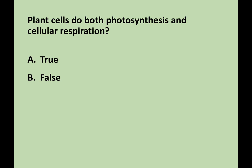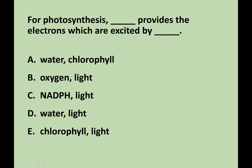Which of the following is a correct distinction between autotrophs and heterotrophs? The answer is C: autotrophs, but not heterotrophs, can nourish themselves beginning with CO2 and other inorganic nutrients. They both require oxygen; they both have mitochondria and do cellular respiration — so those options are wrong. Plants do cellular respiration. For photosynthesis, blank provides the electrons which are excited by blank. The answer is D — water provides the electrons that are excited by light. Chlorophyll is where it happens, but light is the energy that excites the electrons.